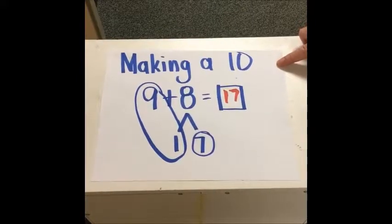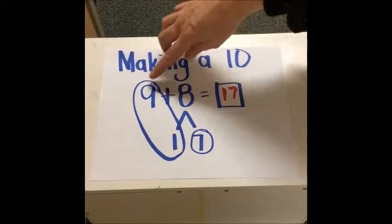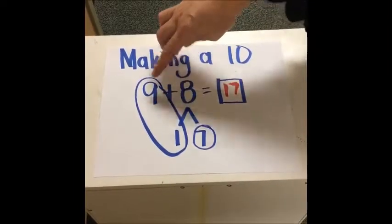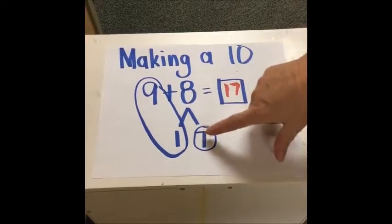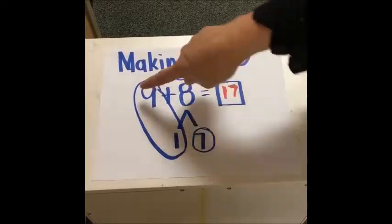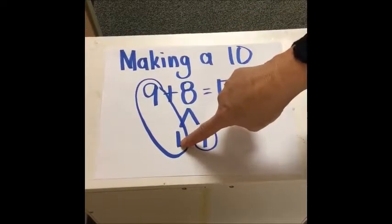The next strategy is making a 10. In this strategy, students take one of the numbers—it's usually a higher number like 7, 8, or 9—and they'll break apart the second number into whatever the partner number is to make a 10.